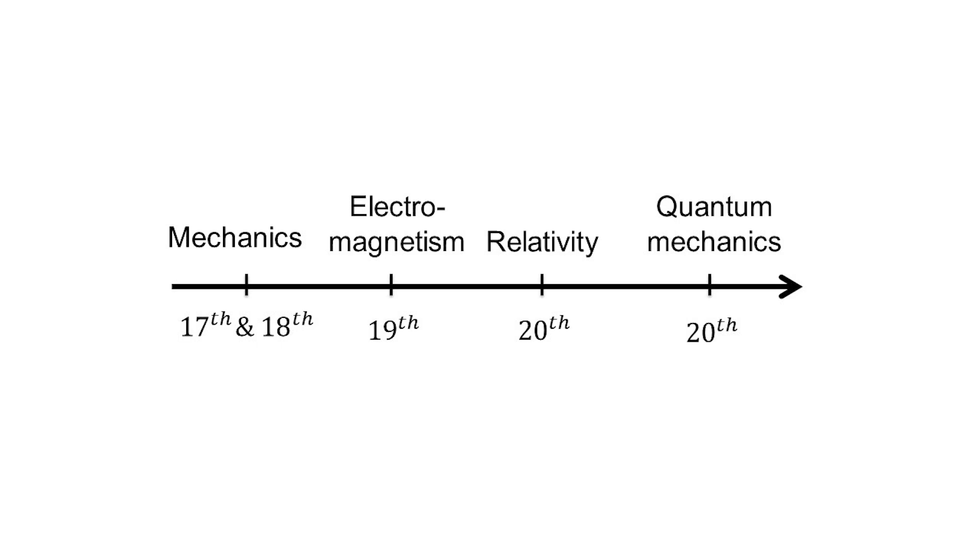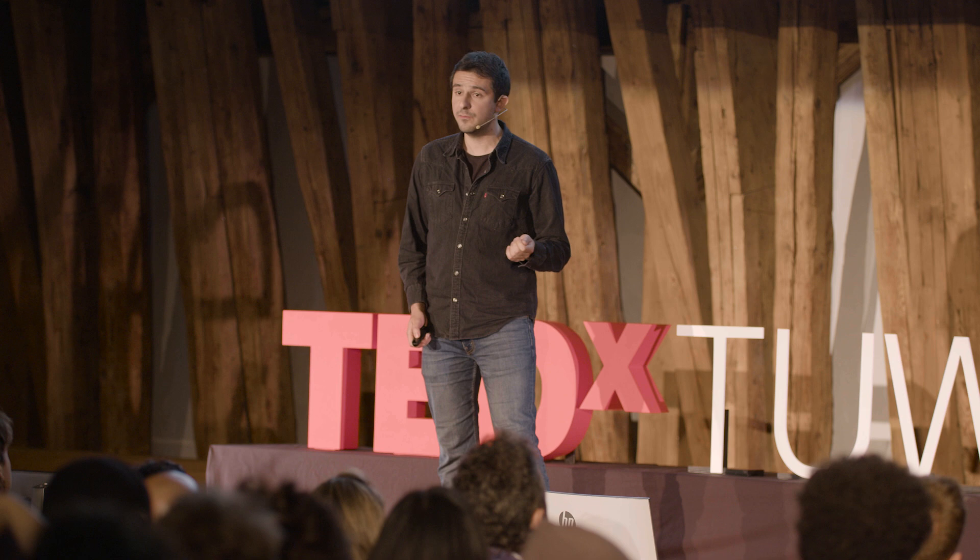The history of physics is full of interpretations of and interplays with mathematical concepts. In the 17th and 18th century, physicists were trying to understand the motion of large rigid bodies, things like planetary orbits and apples falling from trees. They quickly realized that new mathematics was needed in order to talk about these things in a meaningful way. And thus, calculus was invented.